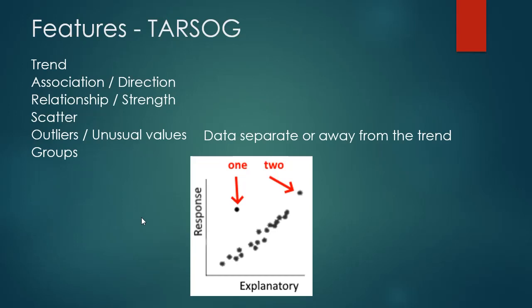There are two reasons why we'd have an outlier. One is that a data point follows the trend but is away from the other data points. The other is that a data point is away from the trend line itself. So an outlier is either separate from the main cluster of data, or away from the trend.